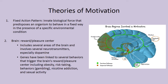Second, we have our brain, which has the reward and pleasure centers. This includes several areas of the brain and involves several neurotransmitters, especially dopamine. Dopamine is our neurotransmitter involved in a lot of the pleasure we receive, as we discussed when we talked about substance abuse. Genes have been linked to several behaviors that trigger the brain's reward pleasure center, including obesity, risk-taking behaviors such as gambling, nicotine addiction, and sexual activity. When we look at these ideas of motivation, we have to remember that it's much more essential and biological than just 'I feel like I should do this.'